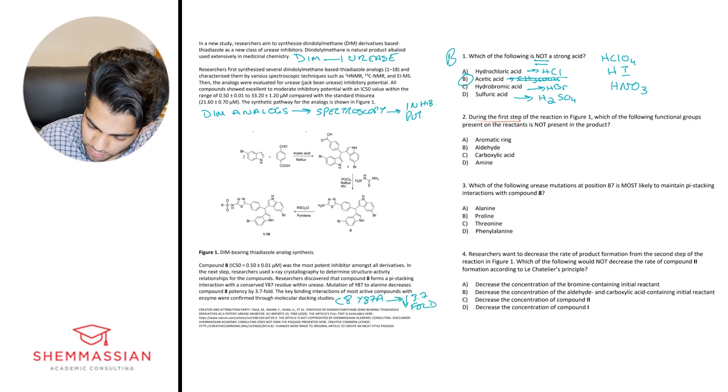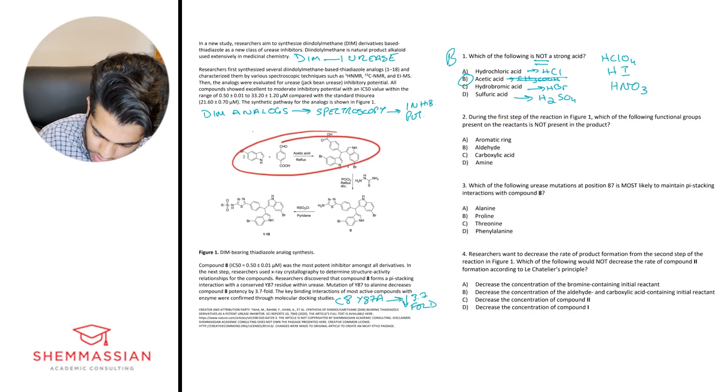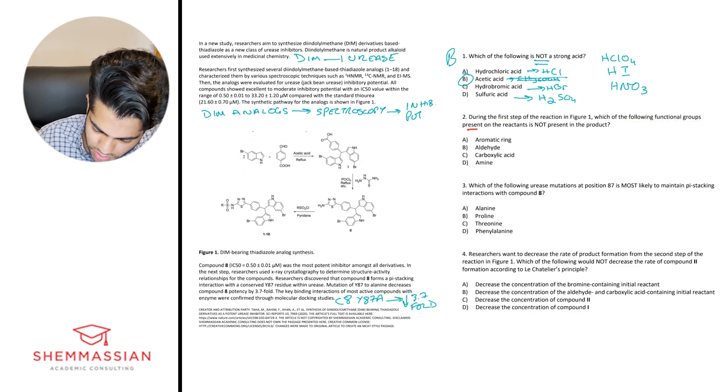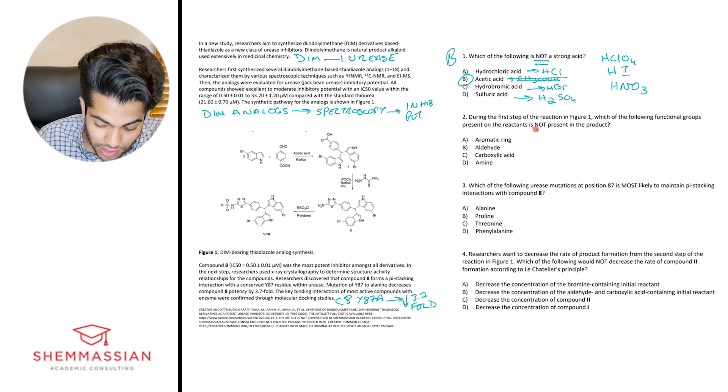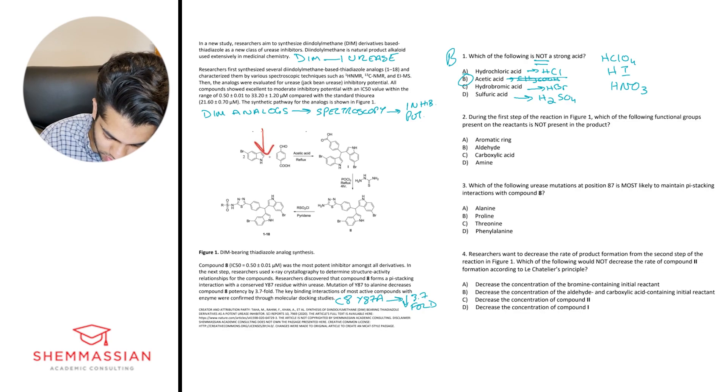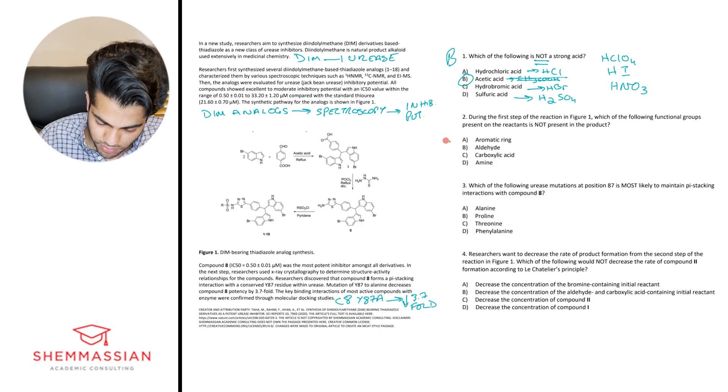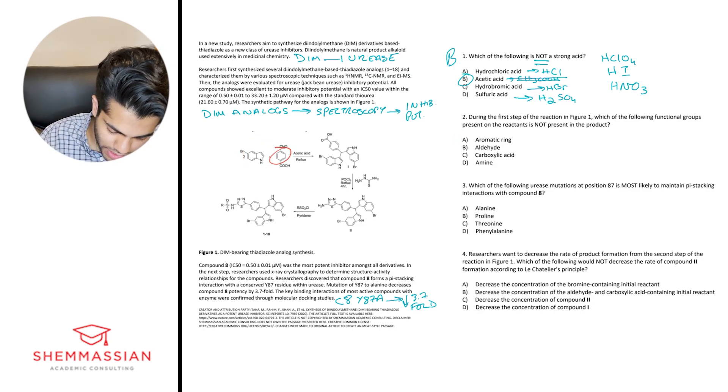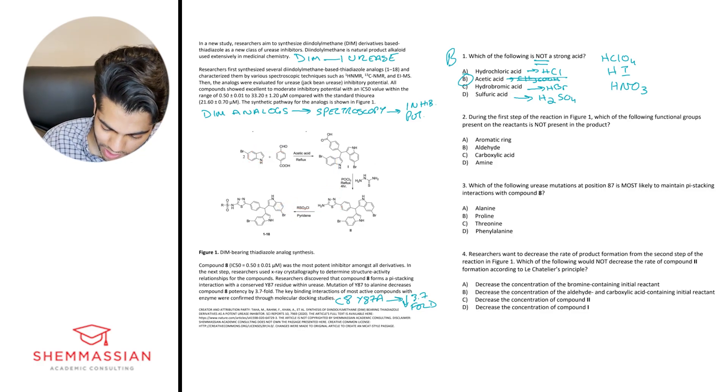During the first step of the reaction figure one, alright, so the first step, which of the following functional groups present on the reactants is again, not present in the product. So in the first step of the reaction, so this right here, which of these functional groups is found here in the reactants, but not here in the products. So aromatic rings. Well, I see them right here and I also see them right here. So these right here, so these are our aromatic rings. So I see a lot of those and even as the reaction continues, they basically just, they're there the whole time. So definitely not going to be A.